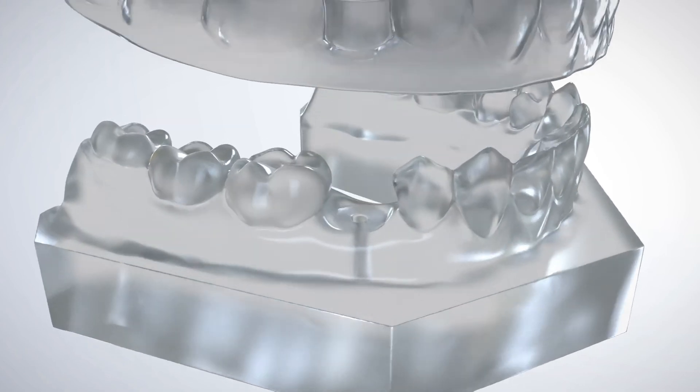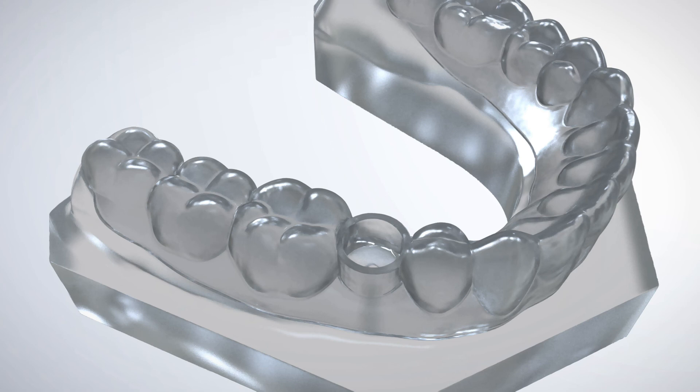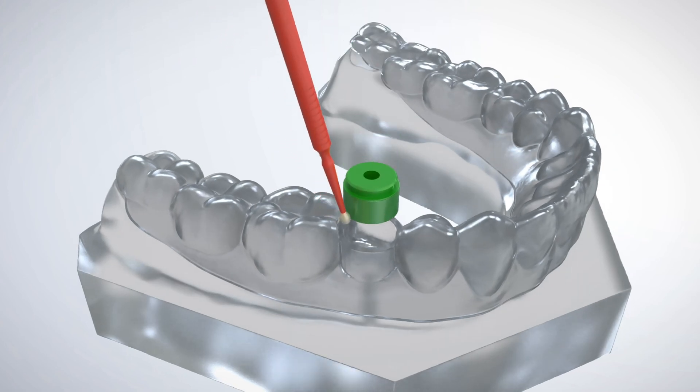A surgical guide created with implant planning software incorporates a cylinder diameter designed to receive the GRS surgical ring. The virtual surgical guide is then 3D printed or milled. A light curable medical grade adhesive is placed around the inside of the surgical guide cylinder and outside the GRS surgical ring.